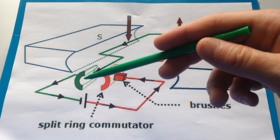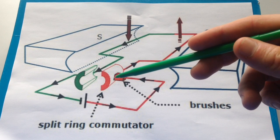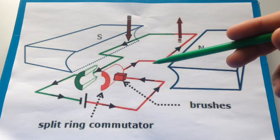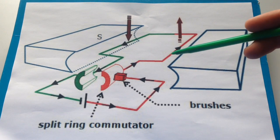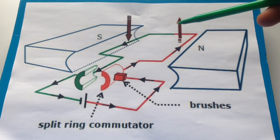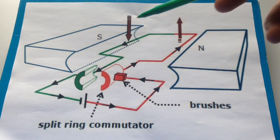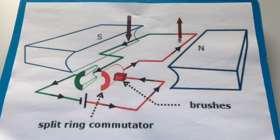And then, of course, the split ring will lose contact with the left-hand brush, will make contact with the right-hand brush, and the current will change direction on this side again. It will be moving away from us, so it will be forced upwards, and then downwards, and upwards, and downwards, and so on.